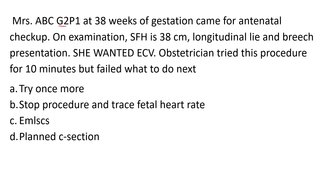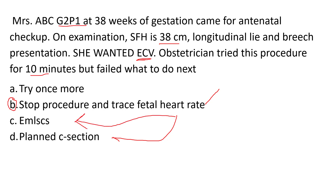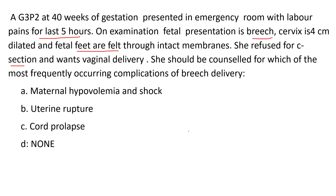The procedure contraindicated here is vaginal breech delivery. Important concept: gravida 2 para 1 (multiparous) at 38 weeks with breech presentation wanted external cephalic version. The obstetrician tried the procedure for 10 minutes but failed. What to do next? Stop the procedure immediately and perform a fetal heart rate trace. If no fetal distress, plan elective C-section. If fetal distress is present, go for emergency C-section. The first step is always to stop the procedure.